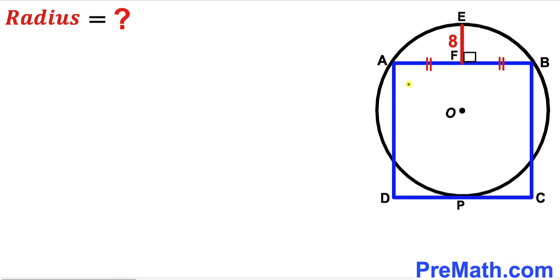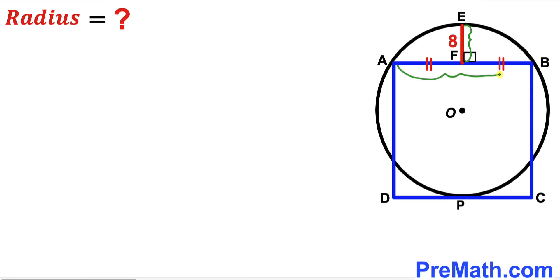Welcome to pre-math. In this video we have this blue square ABCD and a circle with center O, as shown in the diagram, such that chord AB is the side of the blue square. Moreover, the perpendicular EF is the bisector of chord AB — meaning segment AF equals segment BF — and the perpendicular EF has a length of 8 units. Our task is to calculate the radius of this circle.